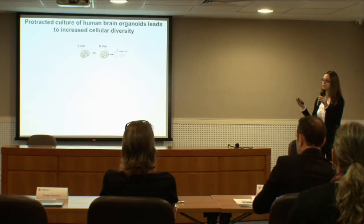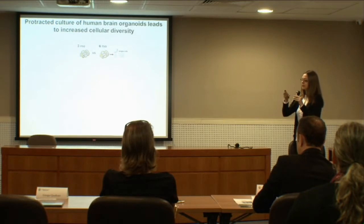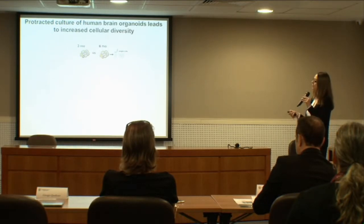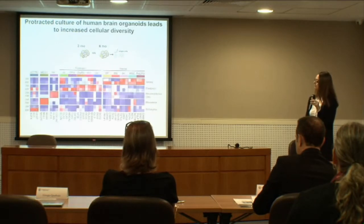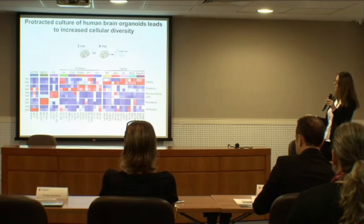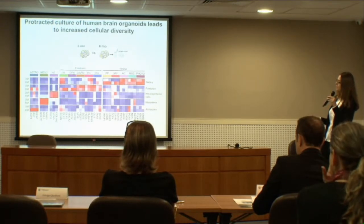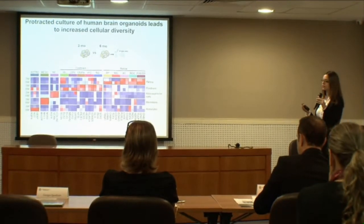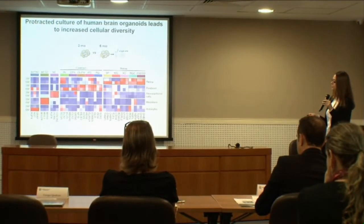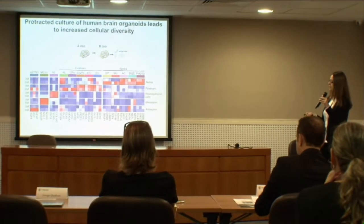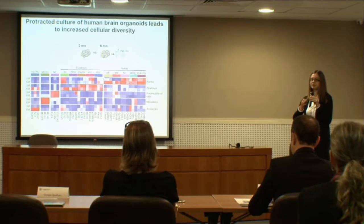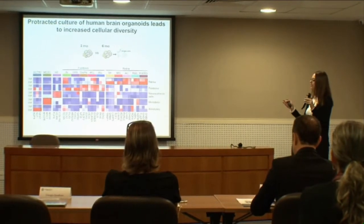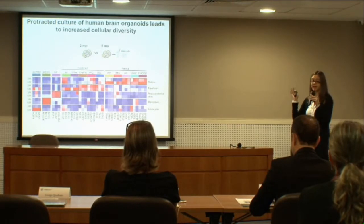Since some of these cell types are normally only present in the post-natal retina, we wanted to understand when in organoid development these cell types arise. We performed single-cell sequencing on three-month-old organoids and compared them with six-month-old organoids. We found that markers for cell types such as bipolar cells and Müller glial cells are only expressed at six months and not at three months. Similarly, for the forebrain cluster, cell types generated later during cortical development such as callosal neurons are present only in six-month-old organoids.